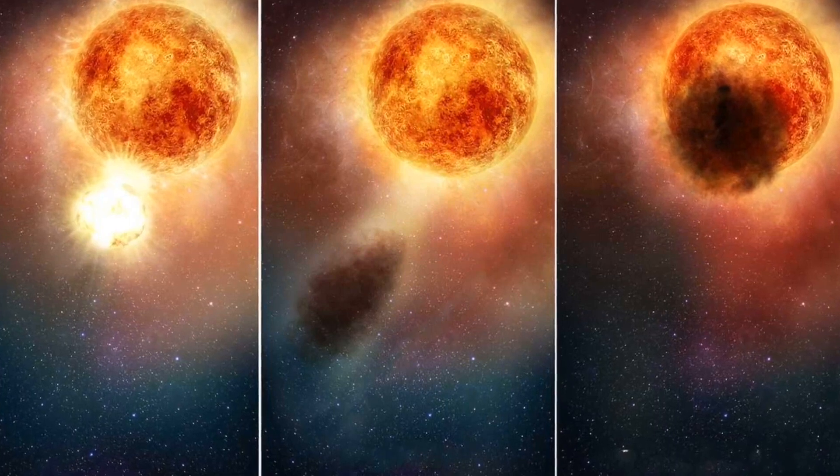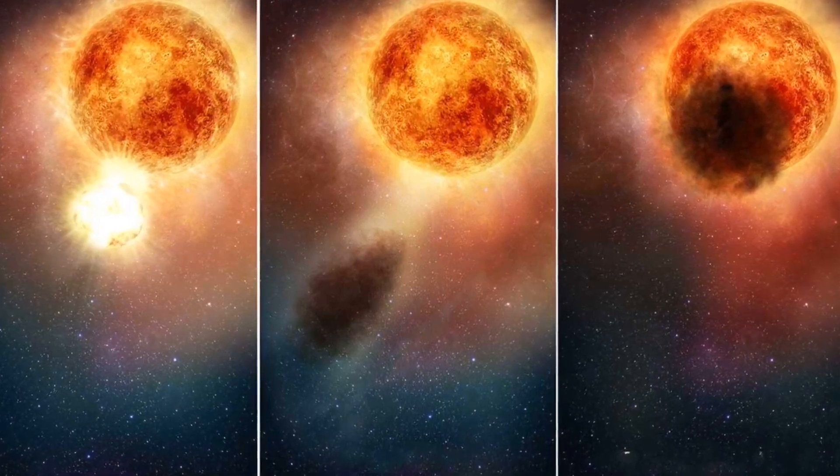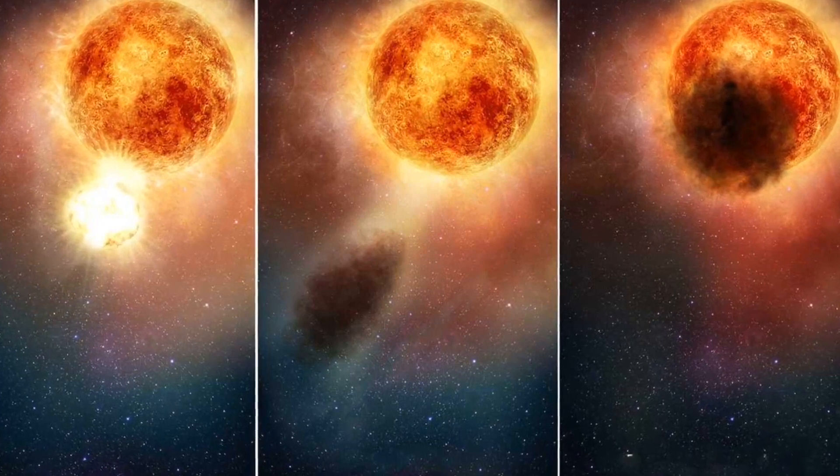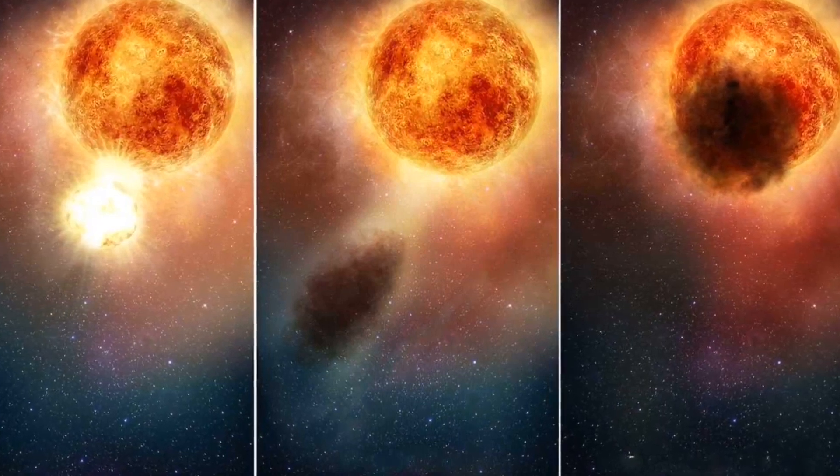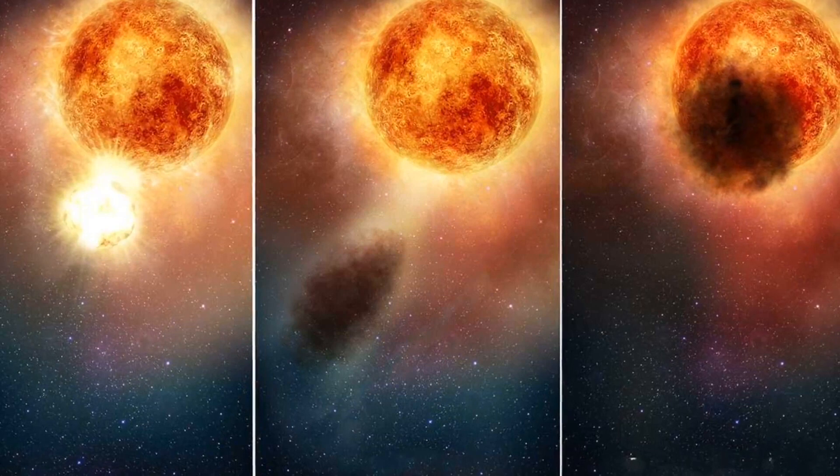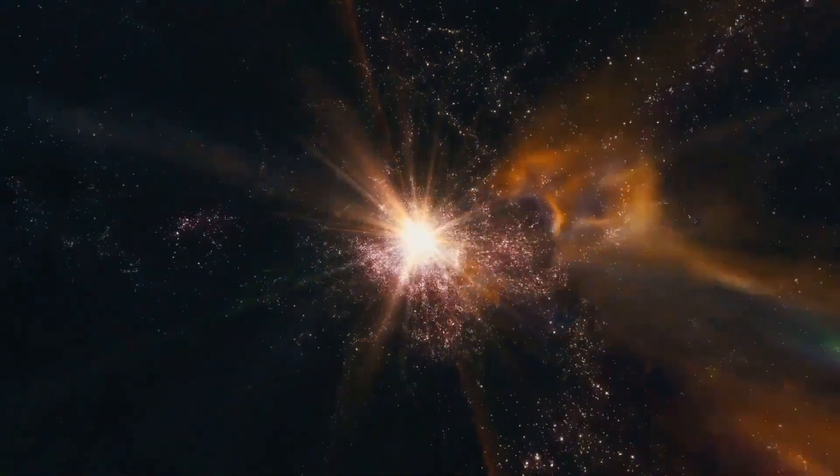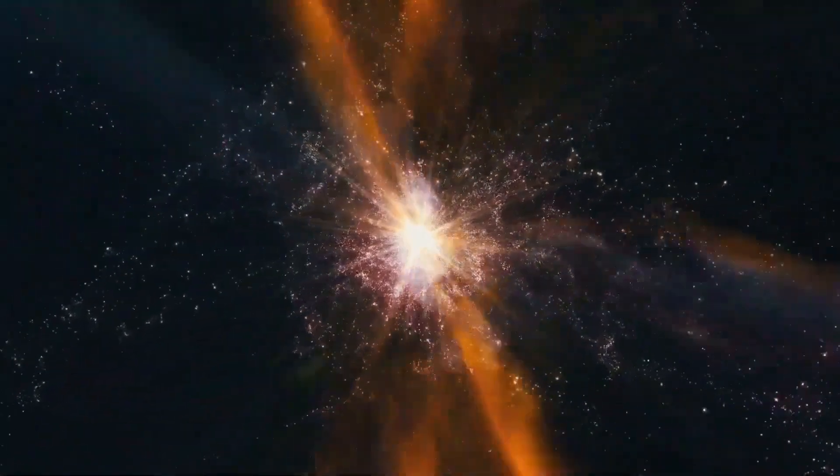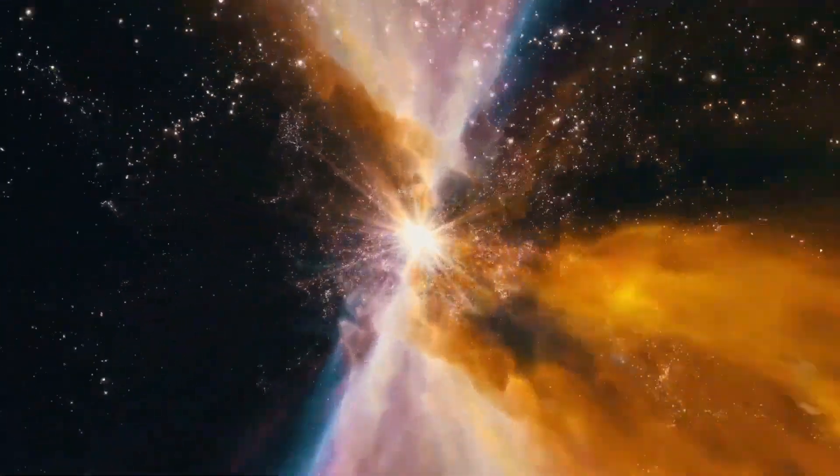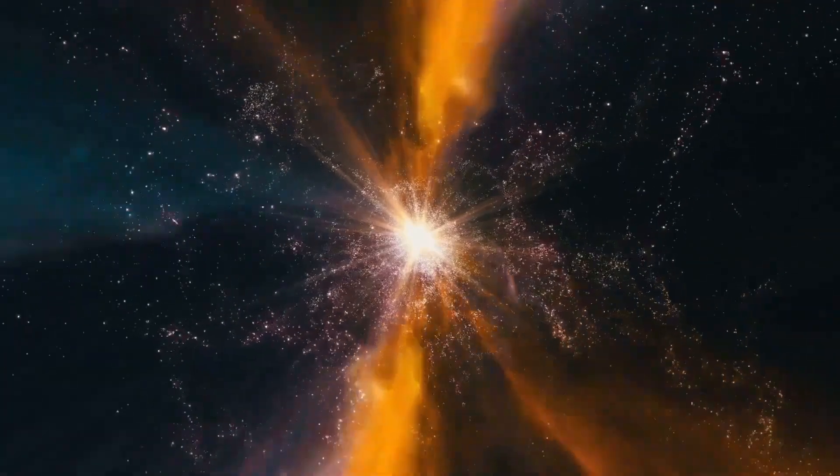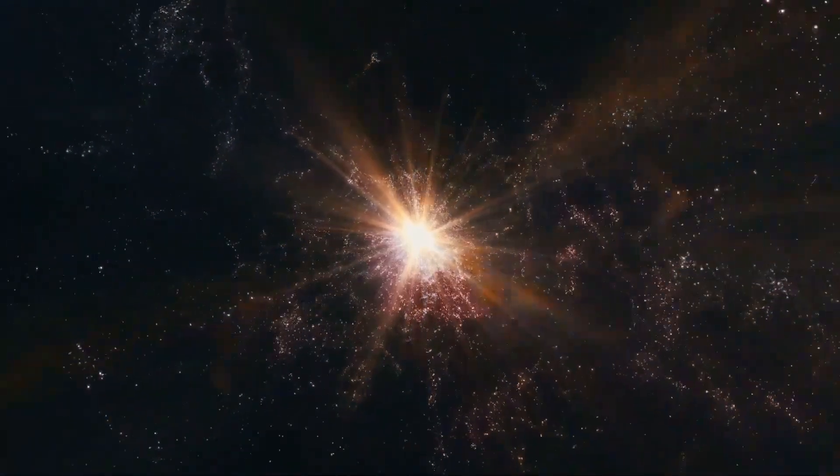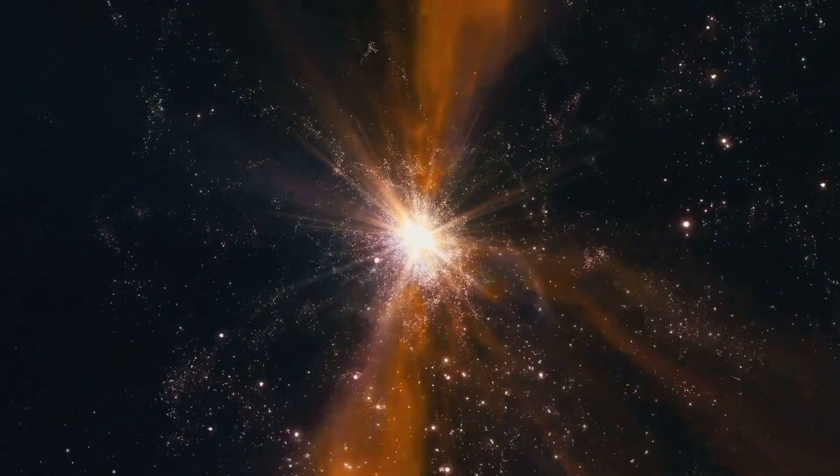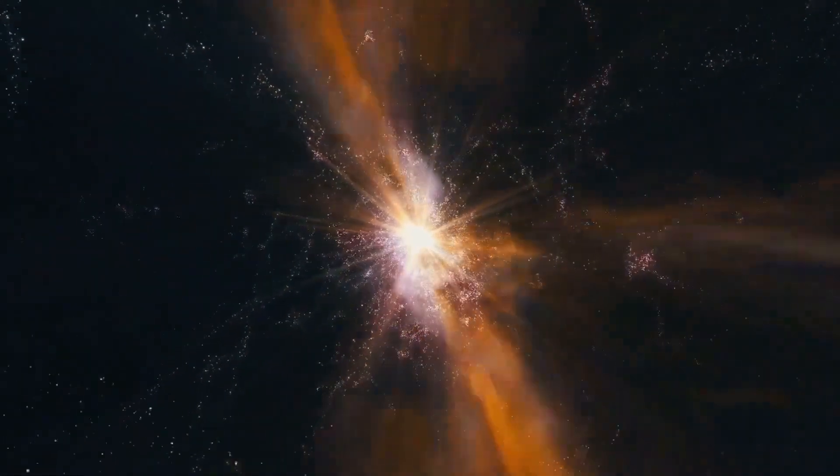It is important to note that, despite Betelgeuse's relative proximity in cosmic terms, 650 light-years represent an astronomical distance. Such vast distances serve as natural barriers against the direct effects of a supernova. Our atmosphere, with its protective shield, would absorb most of the cosmic rays and radiation produced by the supernova, safeguarding life on Earth from direct harm.